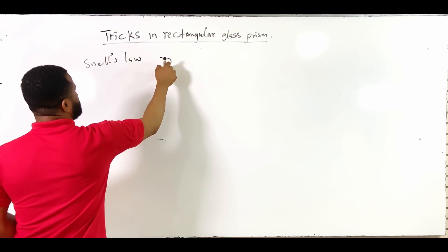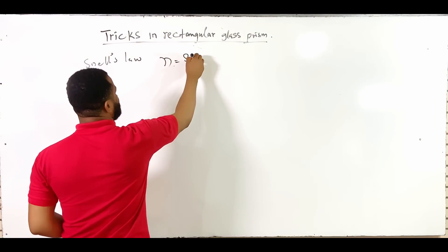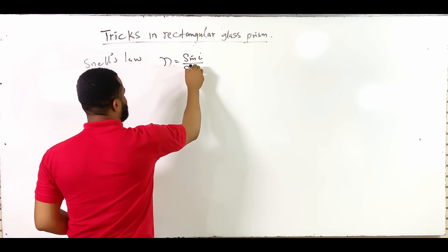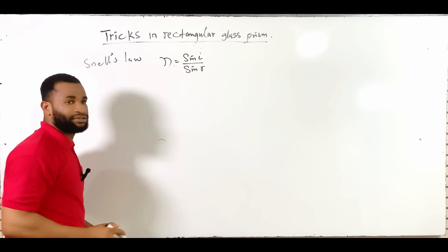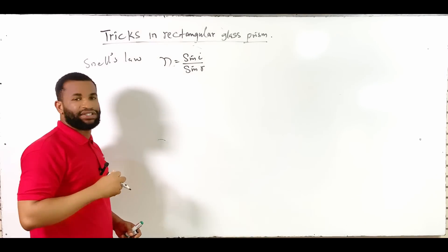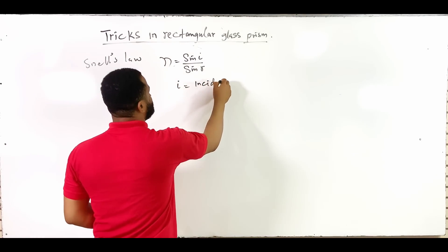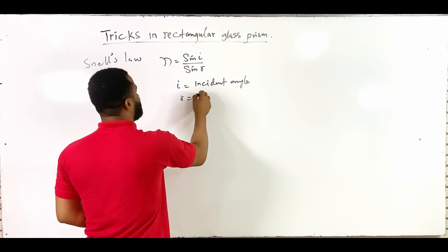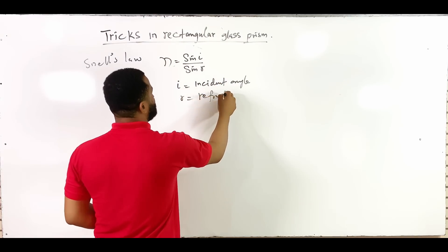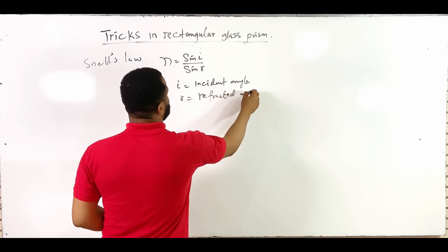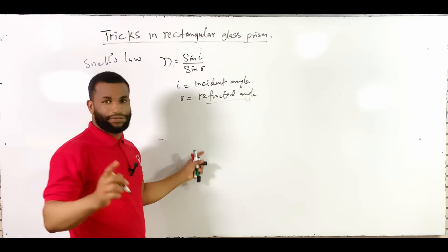This constant is equal to sine of I all over sine of R. What is I? I is incident angle and R is refracted angle.